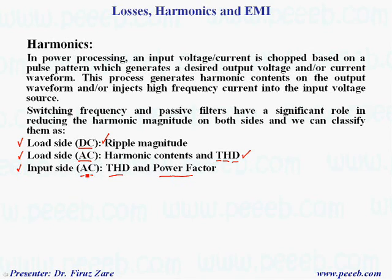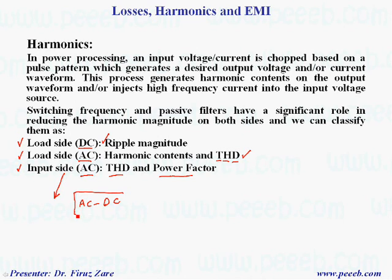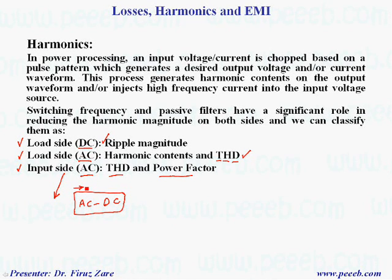For example, in an AC-to-DC converter, the input current may be distorted by the load, injecting significant harmonics into the system. That's why we should consider the input current and reduce it based on IEC standards.